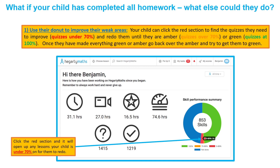How else could Hegarty be used if they've completed all their homework? On the front screen there's the summary page with a doughnut shape at the bottom right which is a summary of their performance. The red section shows the topics which students struggled on and didn't do as well on in their quiz. It remembers these so students can click on the red section and go back to re-look at topics they've done previously and not done so well on.